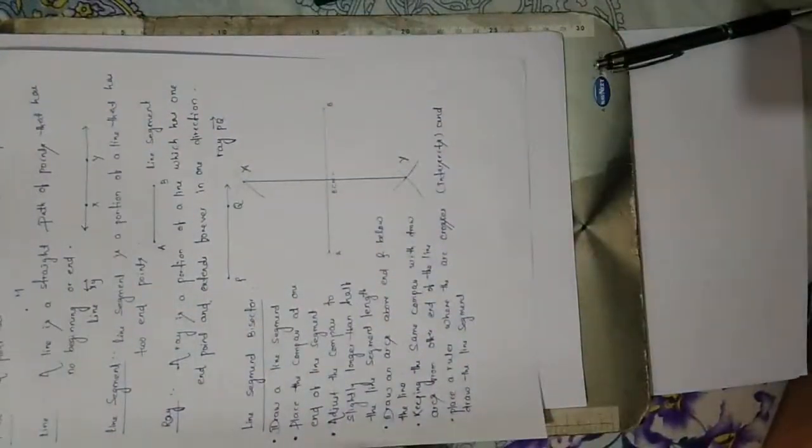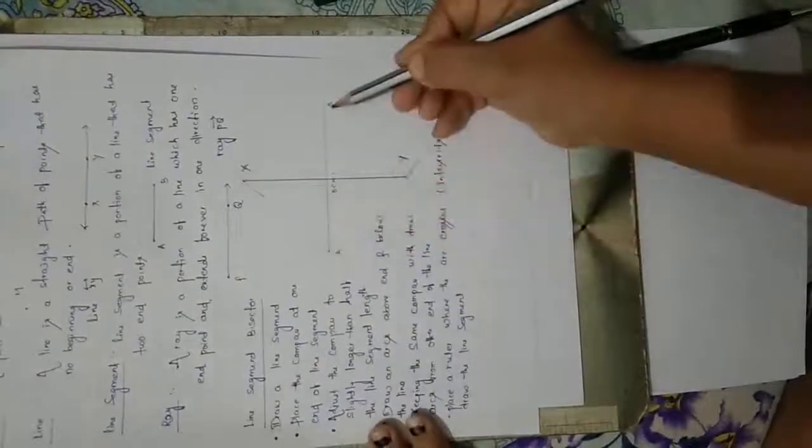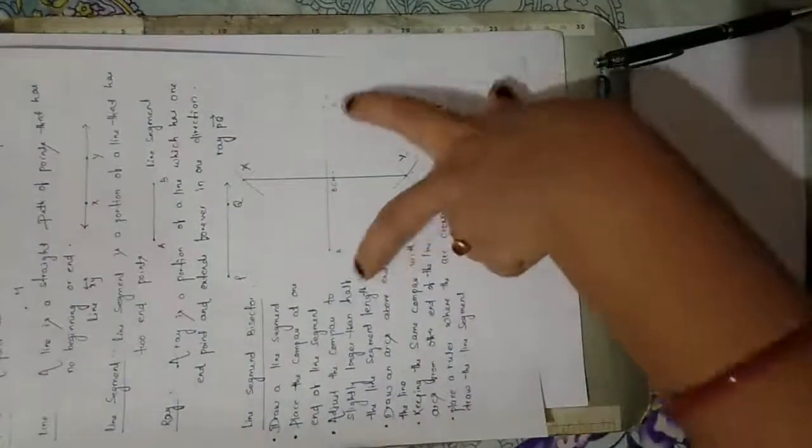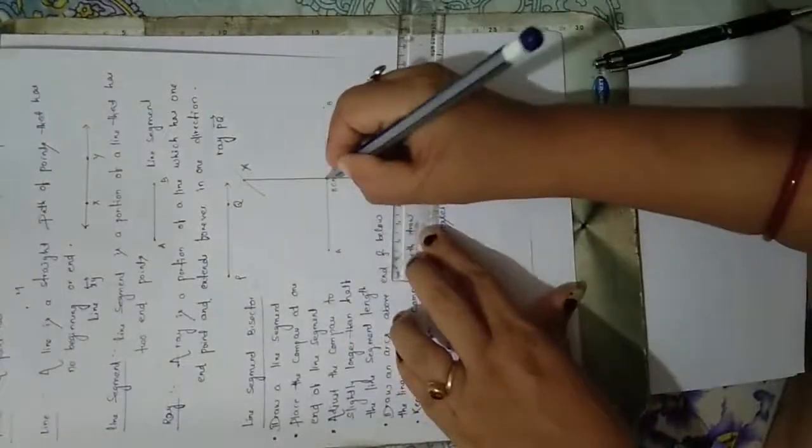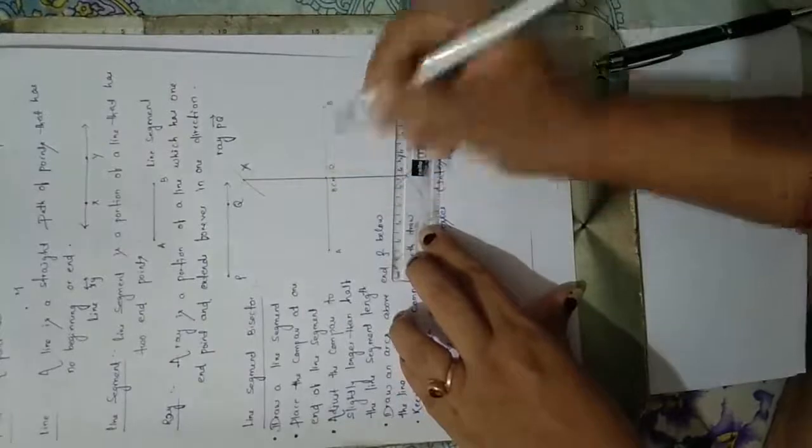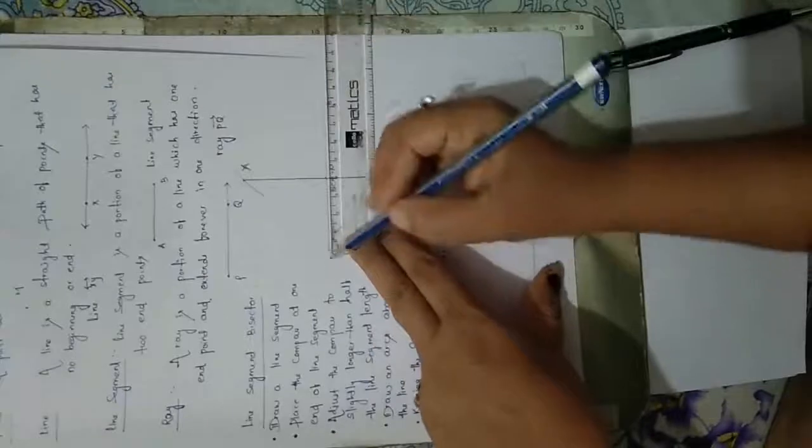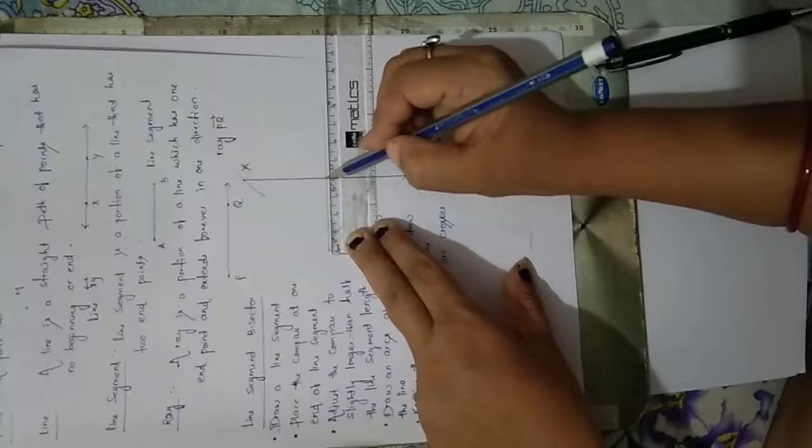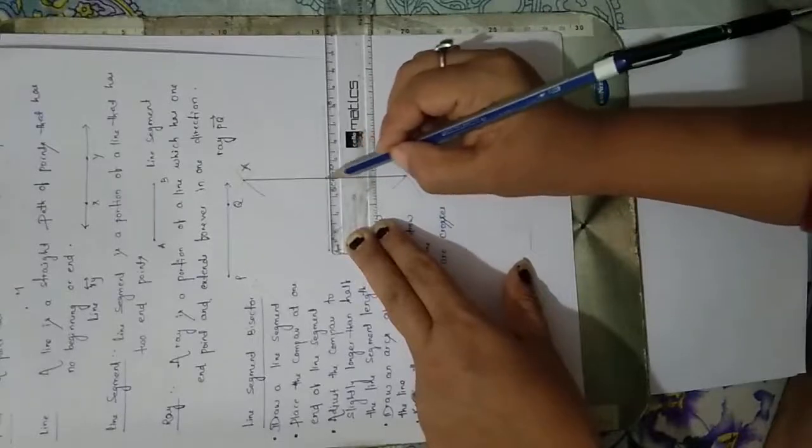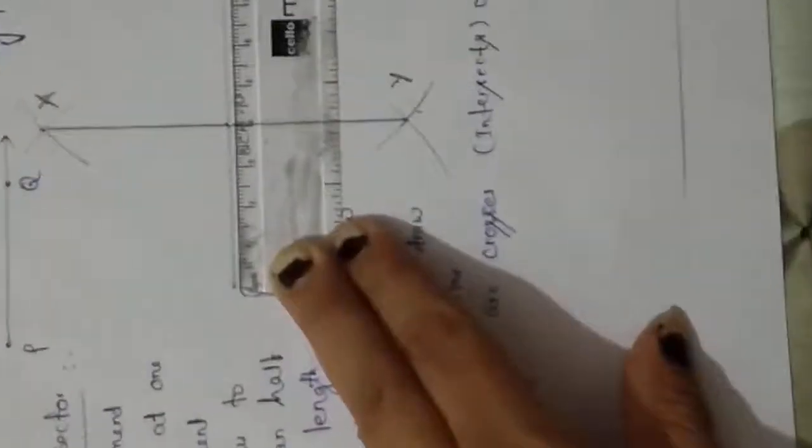This XY line now bisects AB. If initially it was 8 centimeters, now check this point where it touches the line, that is point O. See here, exactly 1, 2, 3, 4. Exact 4. See here, exact 4 centimeters.